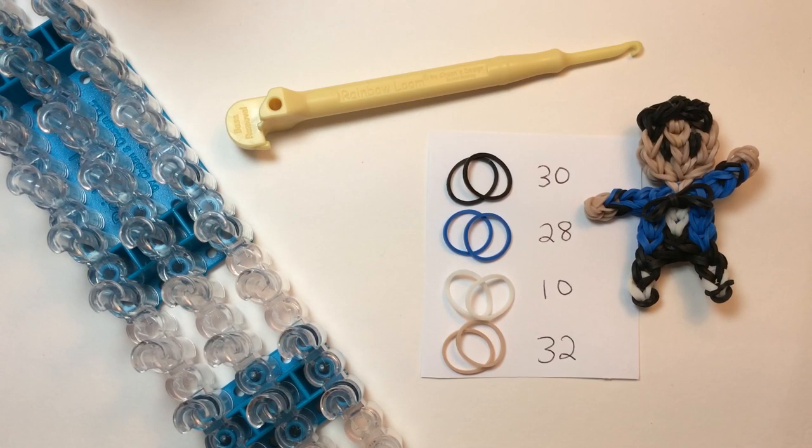Get your supplies ready. To make this figure, you'll need 30 black rubber bands, 28 blue rubber bands (I'm using Rainbow Loom brand Ocean Blue), 10 white rubber bands, and 32 in a skin tone. I'm actually using the lightest color from Rainbow Loom's Mixed Camouflage Pack.